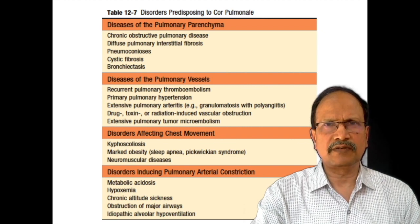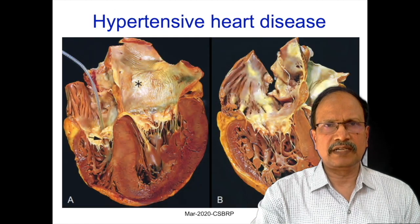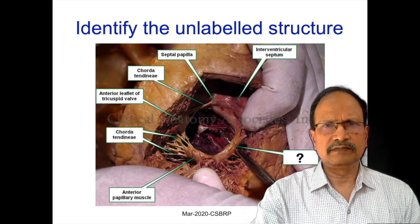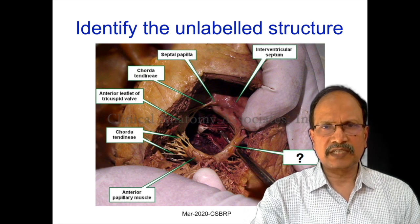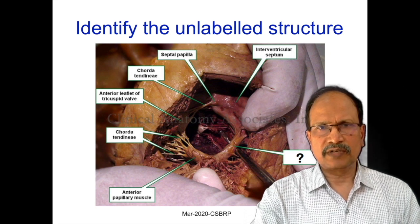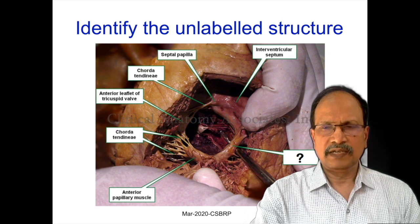It should be remembered that pulmonary hypertension most commonly occurs as a complication of left-sided heart disease. These are the causes for cor pulmonale. This slide highlights the differences between right ventricular and left ventricular hypertrophy. Lastly, there is a question: identify the structure highlighted with the question mark. Leave your comments in the comment box and we will get back to you with the right answer.